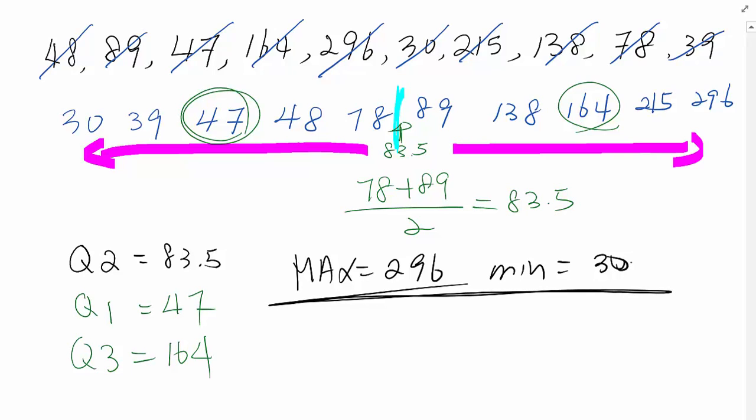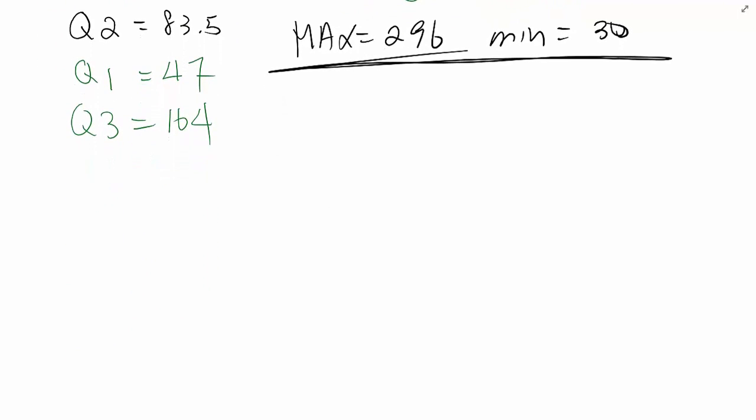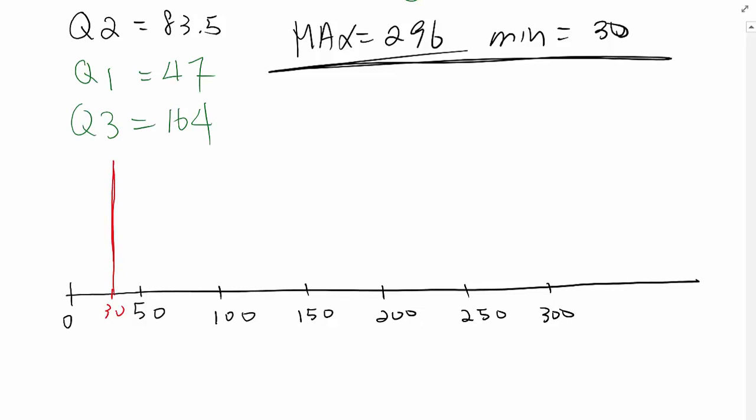Now step four: you actually draw the number line. This number line must cover between 30 and 296. This one is a little bit tough to draw, so I'm going to make every 50 intervals. I'm going to start from 0, 50, 100, 150, 200, and 300. Now mark the minimum value at 30, which is around here, and the maximum 296, almost here.